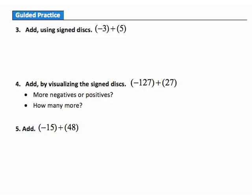Now it's time to check your understanding of adding numbers that are opposites. Pause your video player and answer these guided practice questions. When you're done, hit play to see how you did. Question 3: add using signed disks — 3 negatives and 5 positives. Every positive and negative disk combine to make 0 — three zero pairs form. What's left: 2 positives, so the answer is positive 2.